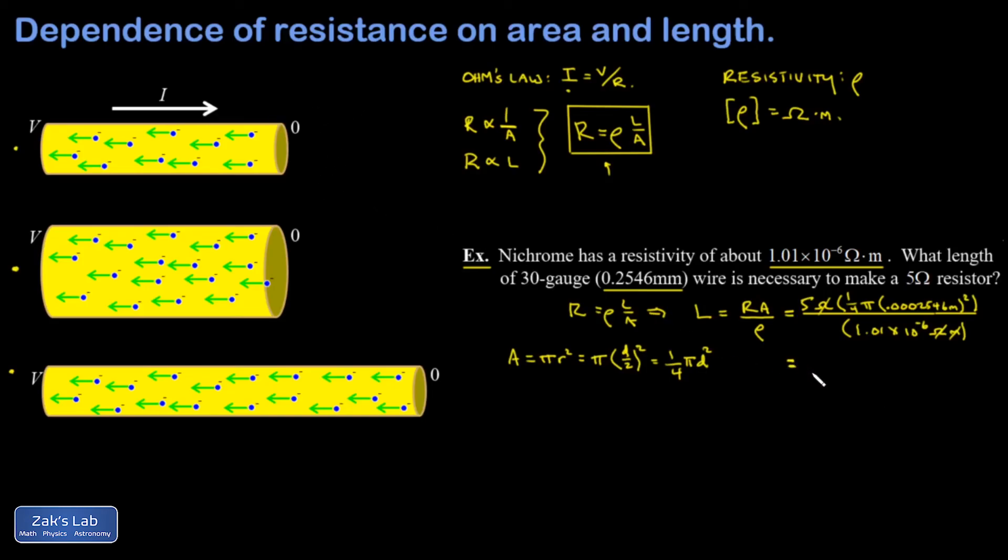When I run the numbers on this I get 0.242 meters, keeping three sig figs, which looks nicer in centimeters as 24.2 centimeters of nichrome wire.